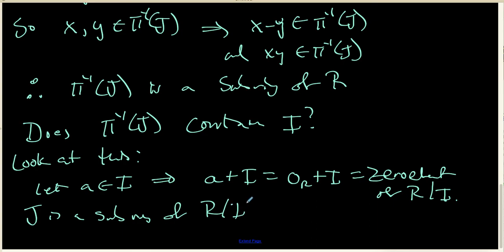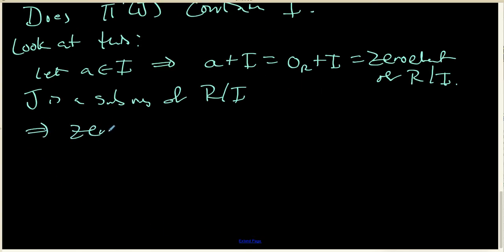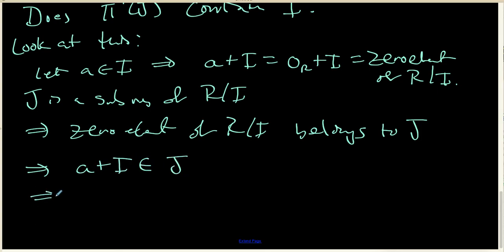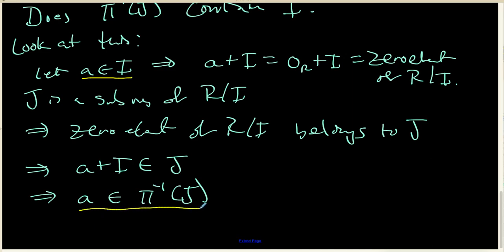Let a be any element of I. Then a plus I and 0 plus I are exactly the same element — they are both the zero element of the quotient ring R mod I. Since J is a subring of R mod I, the zero element belongs to J, which tells us a plus I belongs to J, and therefore a belongs to the pre-image of J. So a inside I implies a is inside the pre-image of J, meaning I is indeed a subset of the pre-image of J.